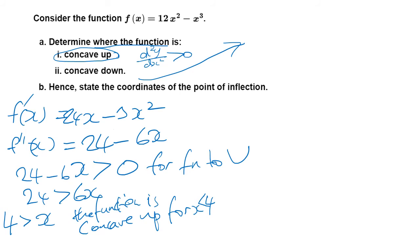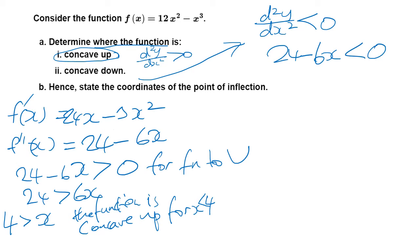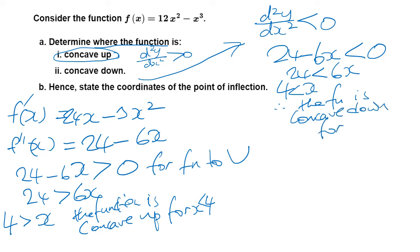Now let's work out where the function is concaving down — that's just the opposite. When concaving down, the second derivative is less than 0. So: 24 − 6x < 0, which gives 24 < 6x, and dividing both sides by 6: x > 4. So the function is concave down for x > 4.